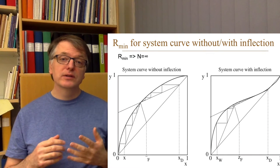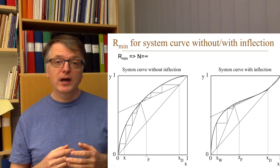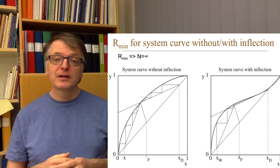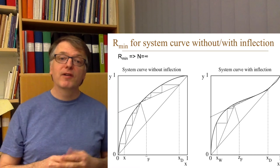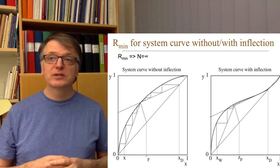The smaller the reflux ratio, the higher the number of equilibrium stages you need. For a simple system curve, you find the minimum reflux ratio point by drawing the Q-line to the equilibrium curve and then drawing the upper operating line through that intersection. But if you have a bumpy system curve with an inflection on it, you can actually reach that limiting point at an even higher reflux ratio than that.